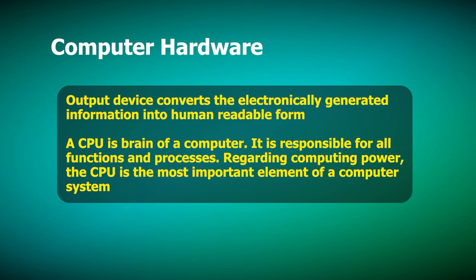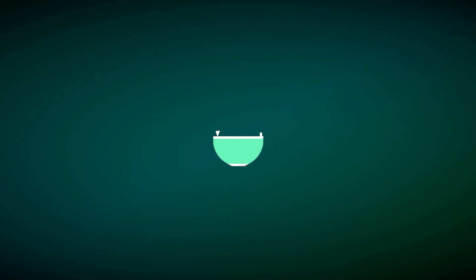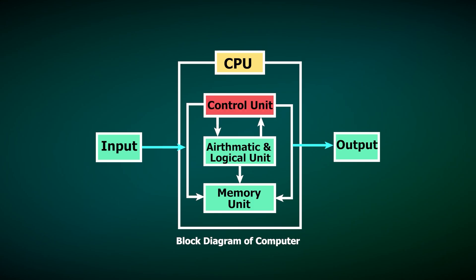Inside the computer system there is a processor called the central processing unit. The CPU is the brain of the computer system — just as the brain is very important in the human body, the CPU is responsible for all functions and all processes in the computer system. The CPU consists of a control unit, an arithmetic and logic unit (ALU), and a memory unit. There are also input devices and output devices connected to it, forming the block diagram of the computer system.